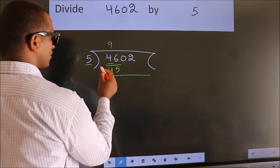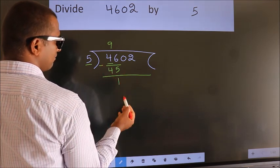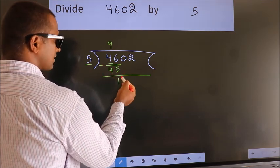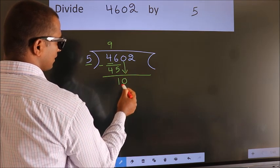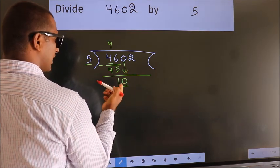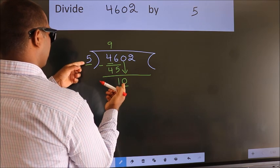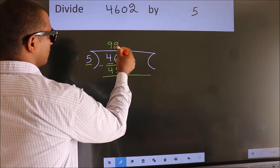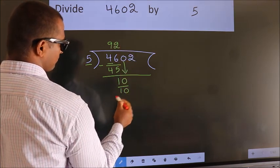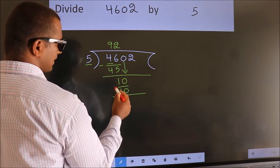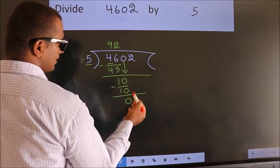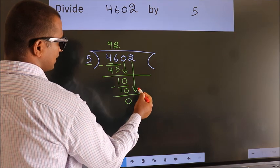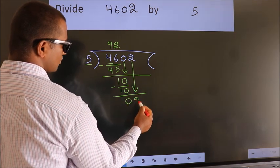Now, we should subtract. We get 1. After this, bring down the beside number. So, 0 down. So, 10. When do we get 10? In 5 table: 5 twos, 10. Now, we subtract. We get 0. After this, bring down the beside number. So, 2 down.